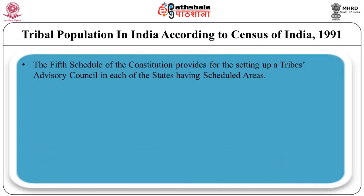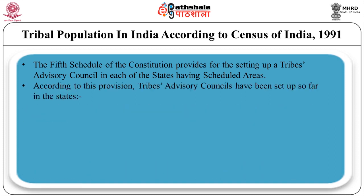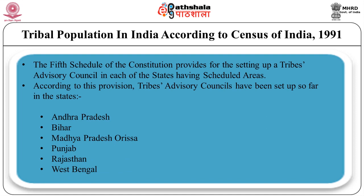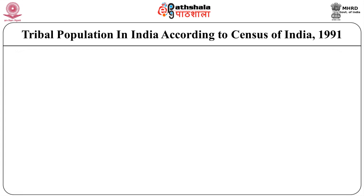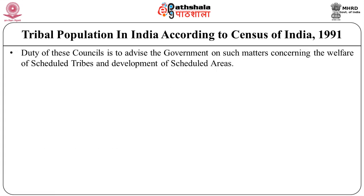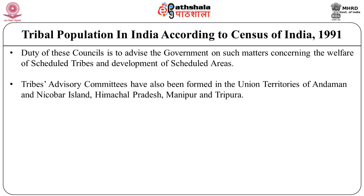The Fifth Schedule of the Constitution provides for the setting up of a Tribes Advisory Council in each state having scheduled areas. Tribes Advisory Councils have been set up in Andhra Pradesh, Bihar, Madhya Pradesh, Orissa, Punjab, Rajasthan, and West Bengal. Their duty is to advise the government on matters concerning the welfare of scheduled tribes and development of scheduled areas. Advisory boards for scheduled tribes have also been set up in Assam, Kerala, and Mysore, while Tribes Advisory Committees have been formed in the union territories of Andaman and Nicobar Islands, Himachal Pradesh, Manipur, and Tripura.